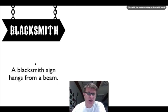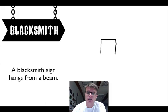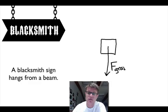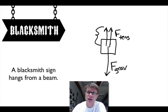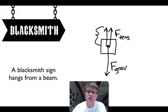Next, a blacksmith sign hangs from a beam, suspended by two chains. Draw the object as a box. There's the force down of gravity. In this case, we have a force up from each chain — two tensional forces. Those two tensional forces should add up to equal the force of gravity downward. In other words, if you add those two vectors, together with the force of gravity, the object really isn't moving at all. That is the correct free body diagram of a blacksmith sign hanging from a beam.